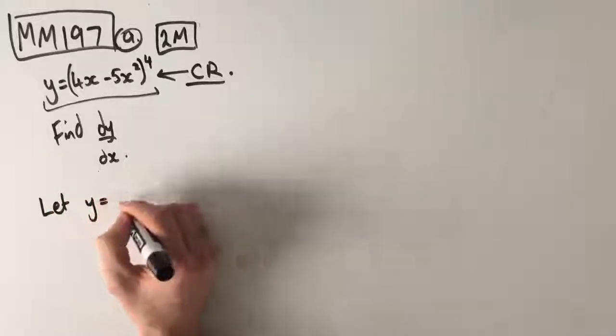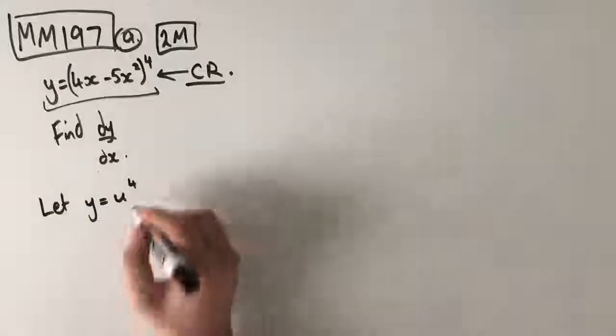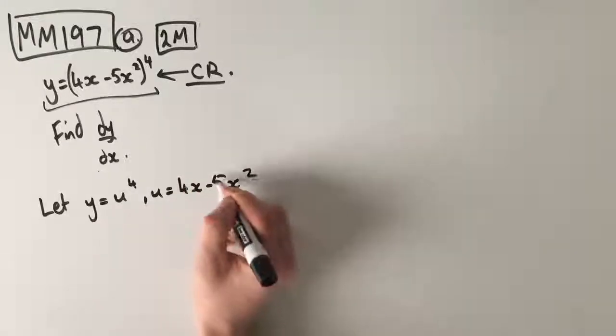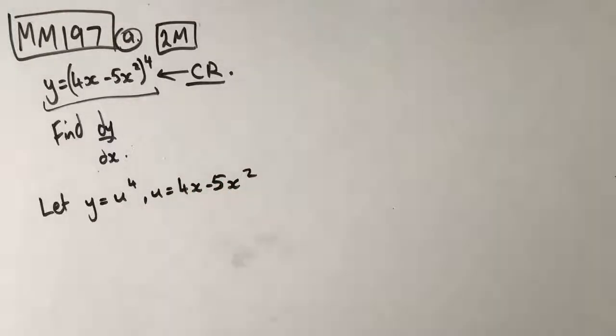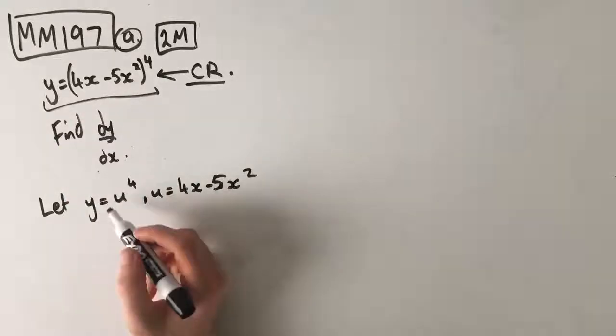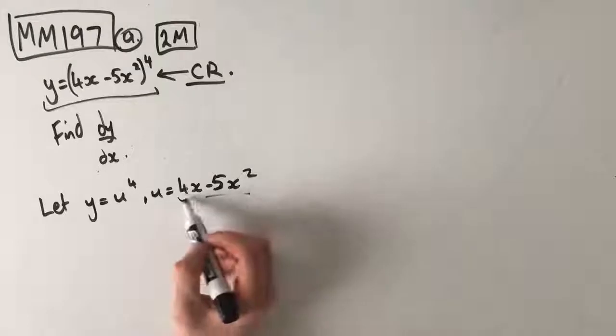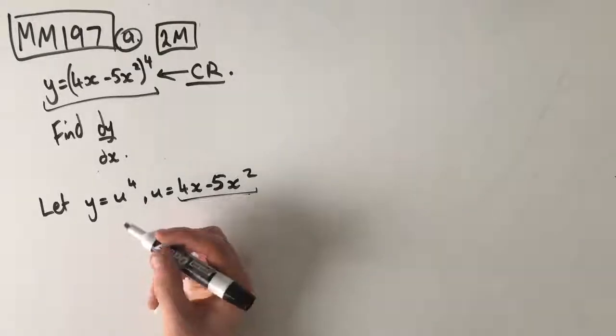So what we're going to do instead is use the chain rule. We're going to say let y is equal to u to the power of 4 where u equals 4x take 5x squared. So here we've got exactly the same thing. We've got y equals u to the power of 4, but instead of having 4x take 5x squared inside, we're just replacing it with a u.